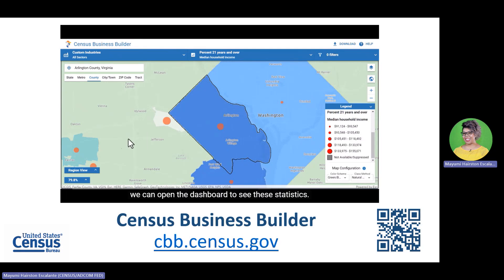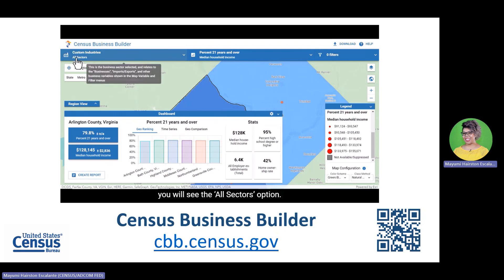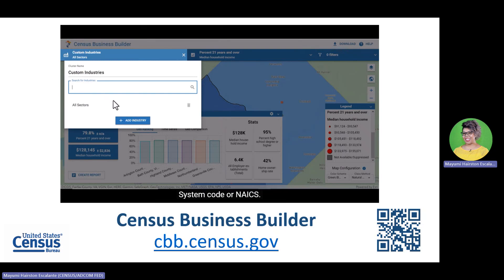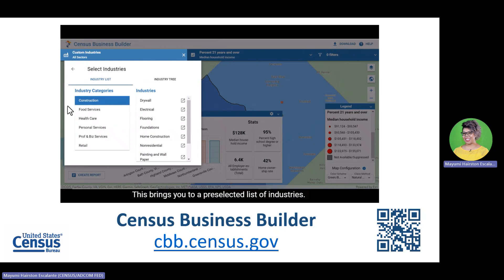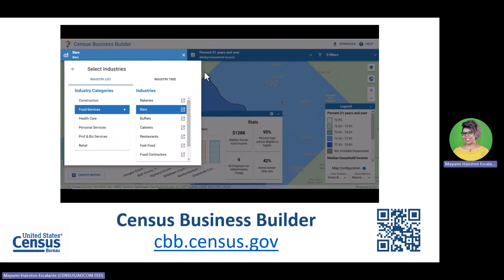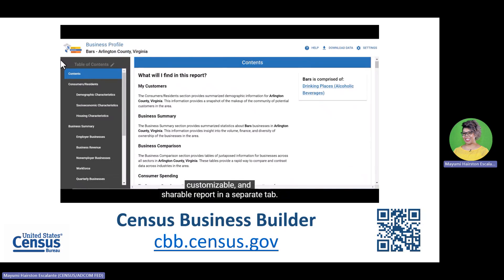Clicking on Arlington County, we can open the dashboard to see the statistics. Once we select this geography, we want to create an industry profile to better understand local economic conditions. You can select an industry by typing in the search bar using the industry name or the North American Industrial Classification System code, or NAICS. You can also click the Add Industry button, which brings you to a pre-selected list. Select Food Services and then select Bars. Then select Create Report from the dashboard and Census Business Builder will generate a downloadable, customizable, and shareable report in a separate tab.